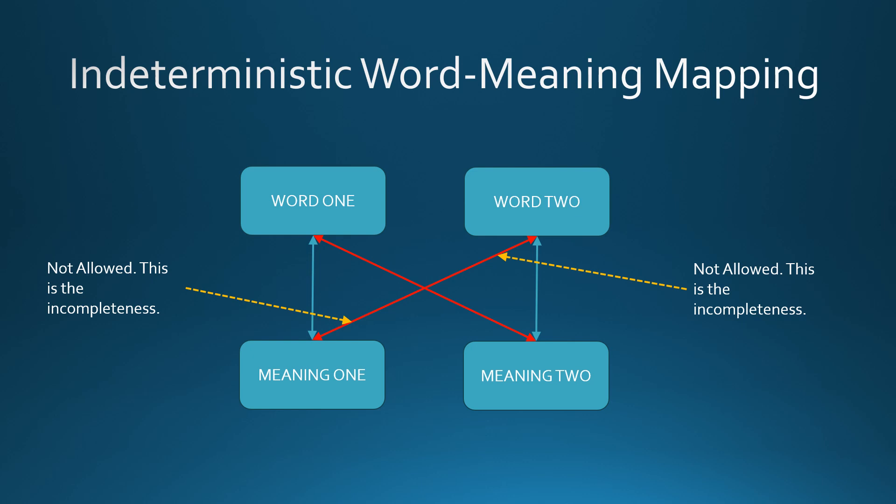Any reduction of the mind or meaning to a body or words, or vice versa, is forever incomplete. Any rational system can handle some sentences correctly, which are denoted by the blue one-to-one mapping between word and meaning. All cross-meanings, denoted by the red mappings, are forbidden.